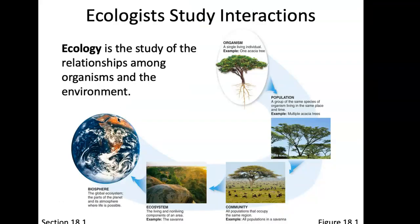Ecologists study interactions — the study of relationships among a particular organism and the rest of the environment. For example, there's an acacia tree here. If you were out in the savanna studying these, you would probably be studying not just one, but a population of them. A population is a group of the same species of organism living in the same place, so multiple acacia trees.